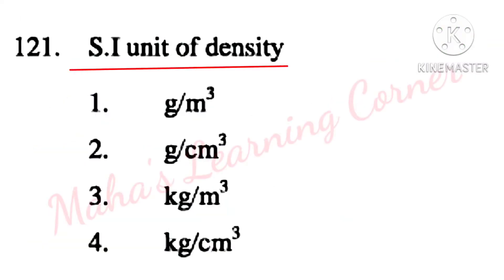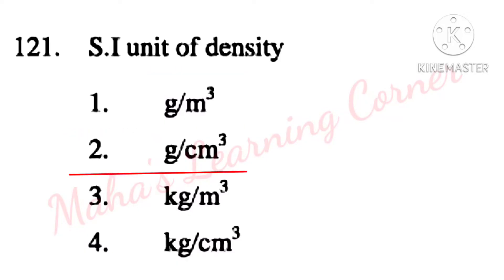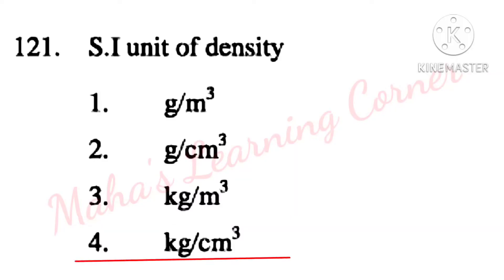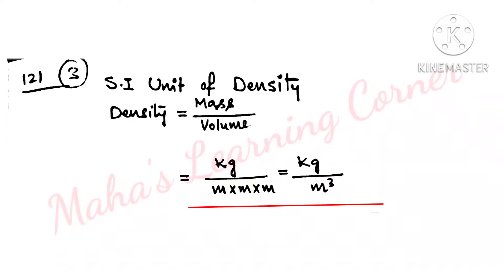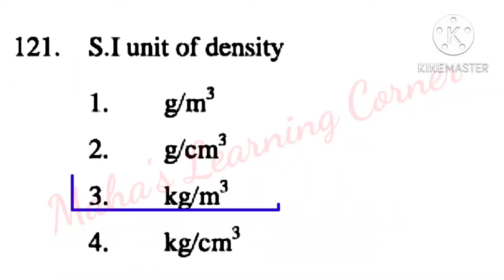SI unit of density. Options: Gram per meter cube, Gram per centimeter cube, Kilogram per meter cube, Kilogram per centimeter cube. Density formula: Mass by volume. SI unit for mass is kilogram, volume is meter cube. So the correct answer is Kilogram per meter cube.